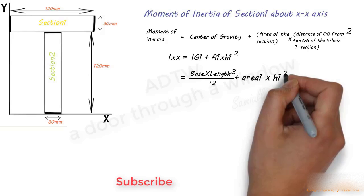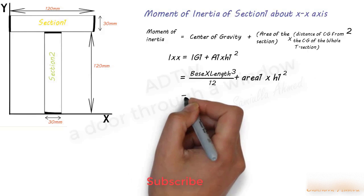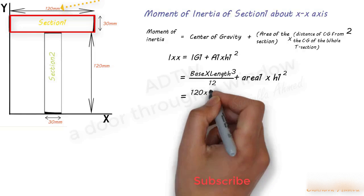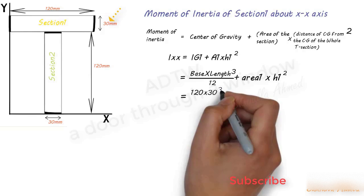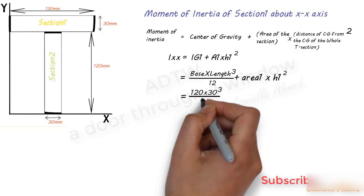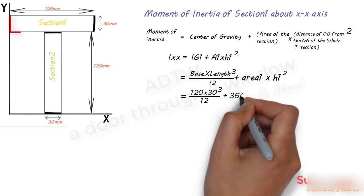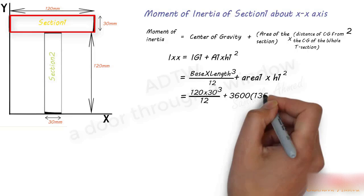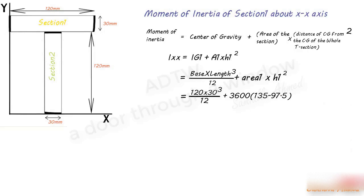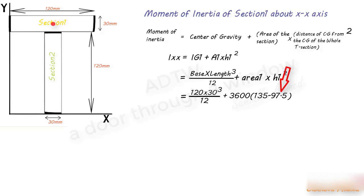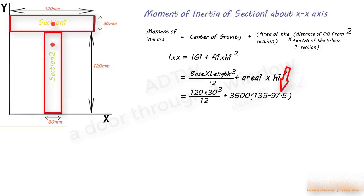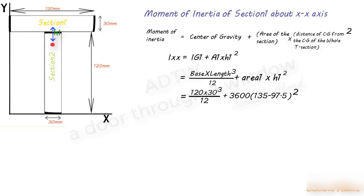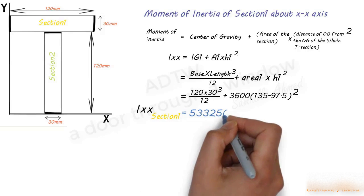Substituting values: IG1 = (120 × 30³) / 12, plus A1 × h1² = 3600 × (135 − 97.5)². Here 135 mm is the CG distance of Section 1 from the X-axis and 97.5 mm is the CG distance of the T-section from the X-axis, so their difference gives h1. After computing, the moment of inertia of Section 1 about the X-axis equals 5,332,500 mm⁴.